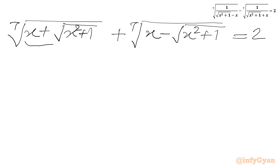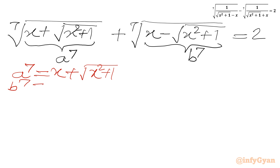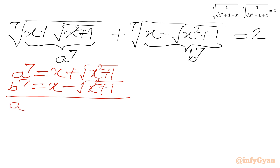Now we will consider the first radicand equal to a⁷ and the second radicand equal to b⁷. So a⁷ = x + √(x² + 1) and b⁷ = x − √(x² + 1). Adding these, a⁷ + b⁷ = 2x.